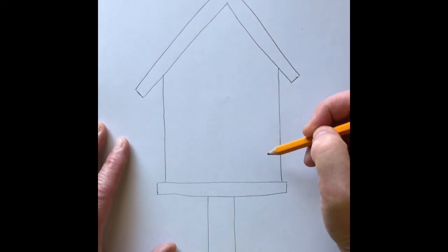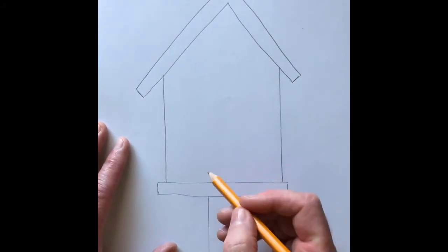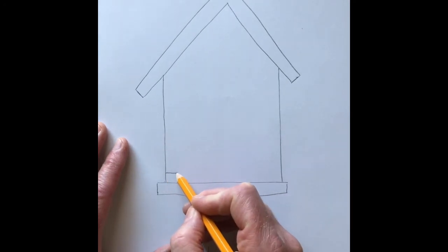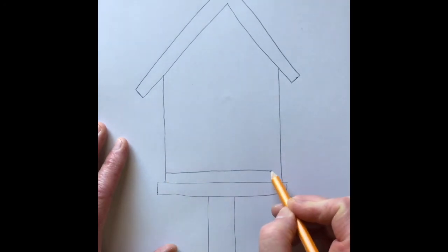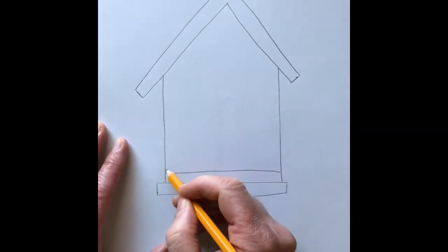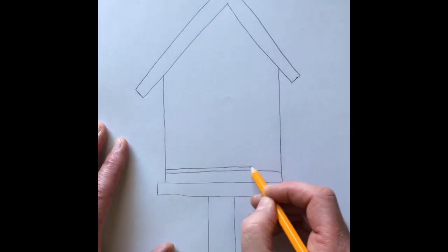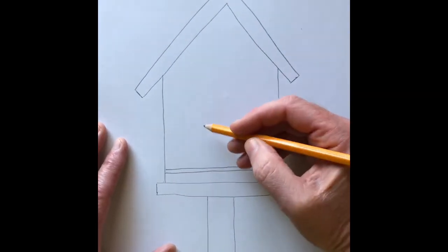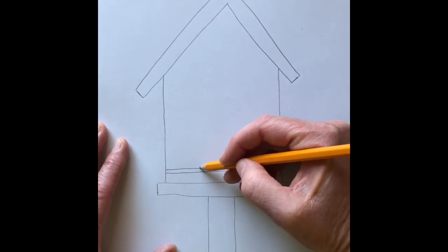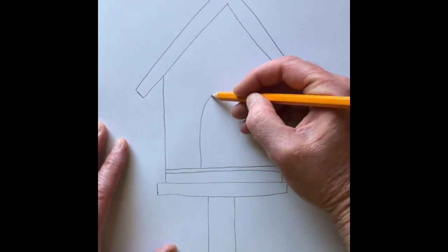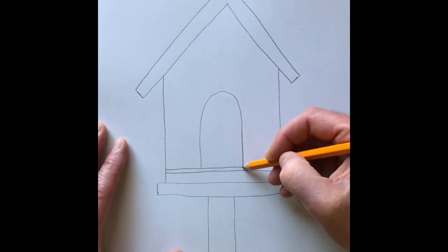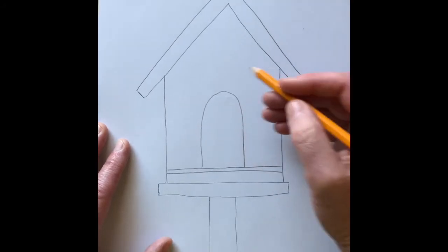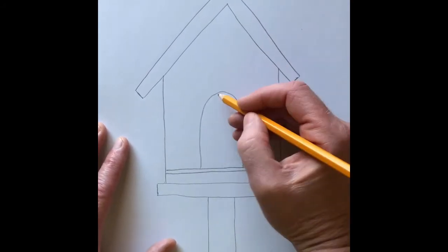Now the bird needs some way to get inside but I'm gonna add some little decorations down here first and then add the bird door. Usually there's some kind of hole or rounded place for the bird to go inside.